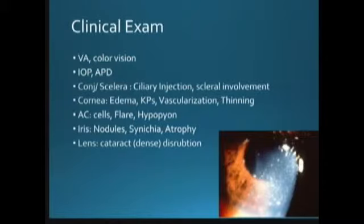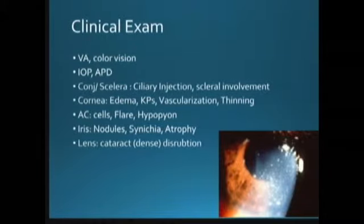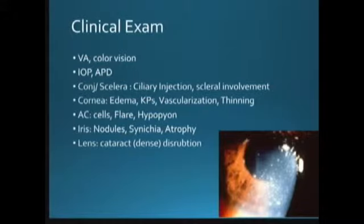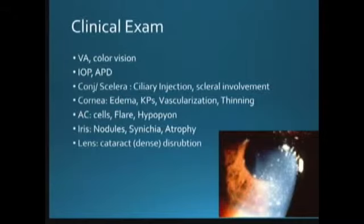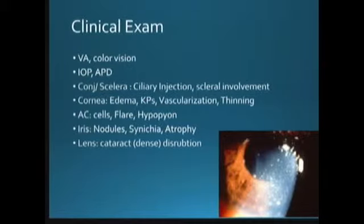In the clinical exam, you need to look at visual acuity, color vision to rule out any optic nerve involvement, intraocular pressure, afferent pupillary defect, conjunctiva and sclera. In the cornea, you need to focus on keratic precipitates, presence of nodules, the AC reaction, what is the extent of the AC reaction, and if there are nodules — where are they located? Is it inflammatory or something else? You also need to comment on the lens.